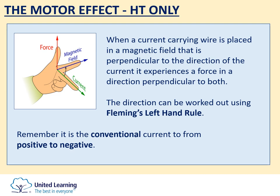The only caveat is that the direction of the current is the conventional current — from positive to negative — rather than the direction of electron flow, which goes from negative to positive. When looking at a circuit diagram showing the motor effect, find the plus symbol on the battery (the long side) to see which way the conventional current is moving. Then orientate your fingers, keeping them perpendicular to each other, to work out the direction of the force.